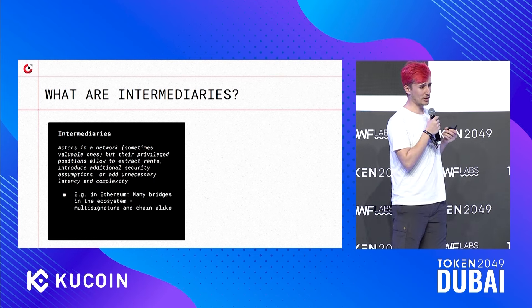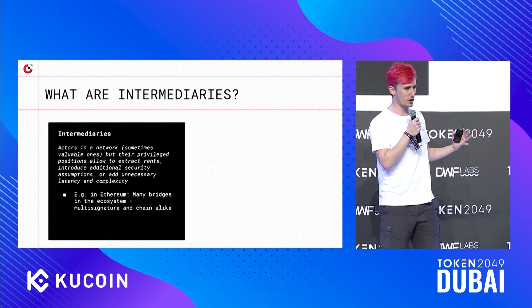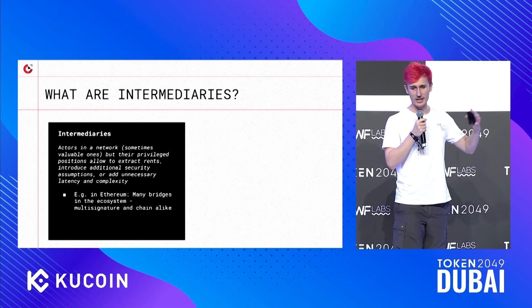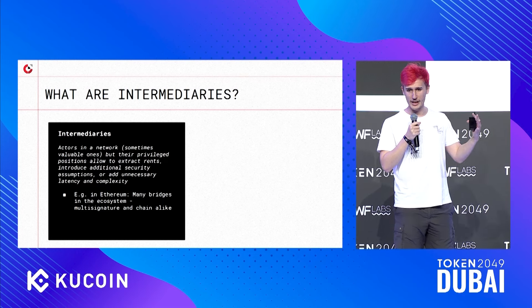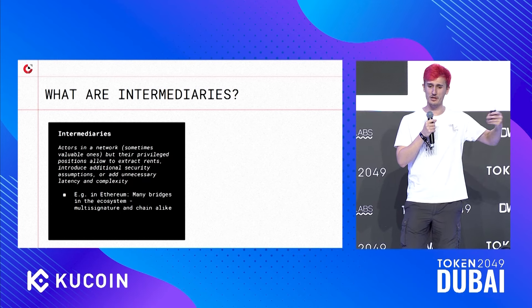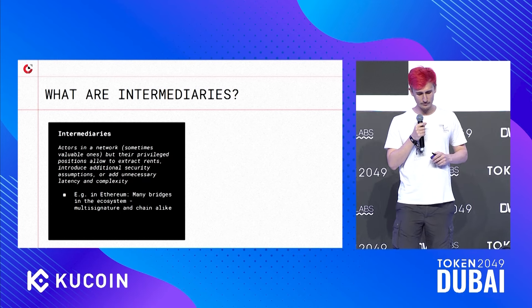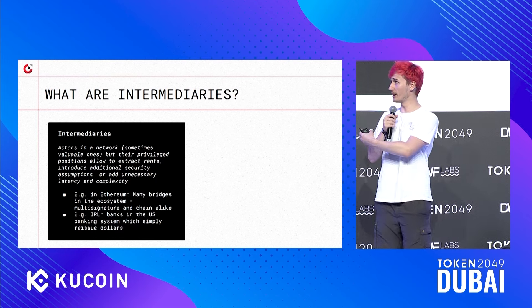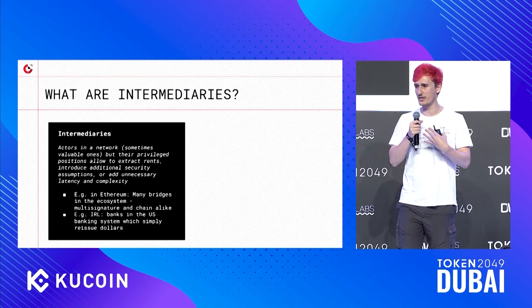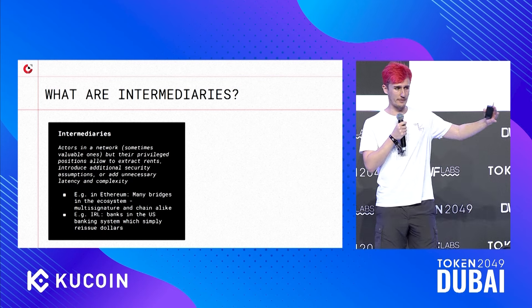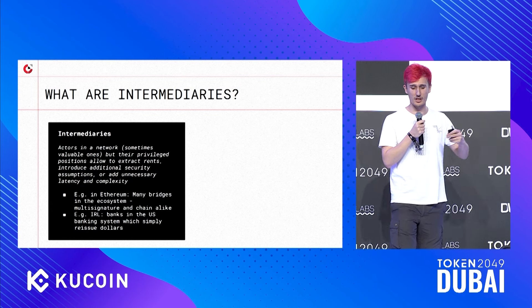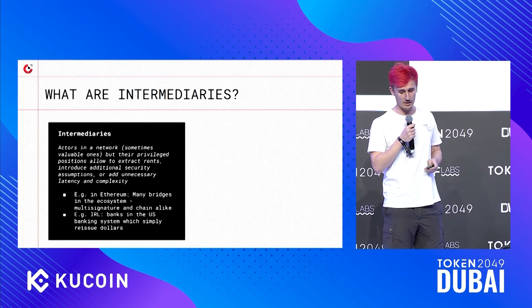In the Ethereum ecosystem, one very good example is that most modern bridges right now are just intermediaries — whether it's a multi-sig bridge or a chain bridge, there are generally counterparties you must consider in your security model. In the real world, banks are a great example of this. Banks are clearly intermediaries that you must use in order to access the financial system, and they do add to your latency and your security concerns.